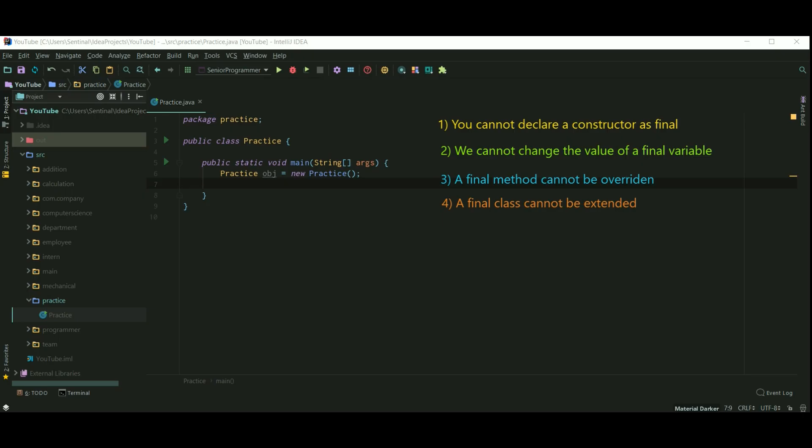Let's summarize what we just learned. First, always remember that you cannot declare a constructor as final. Second, we cannot change the value of a final variable. So I am creating a final variable as float pi equals 3.14. If I try to change the value of pi, then here we are getting an error as unexpected token.